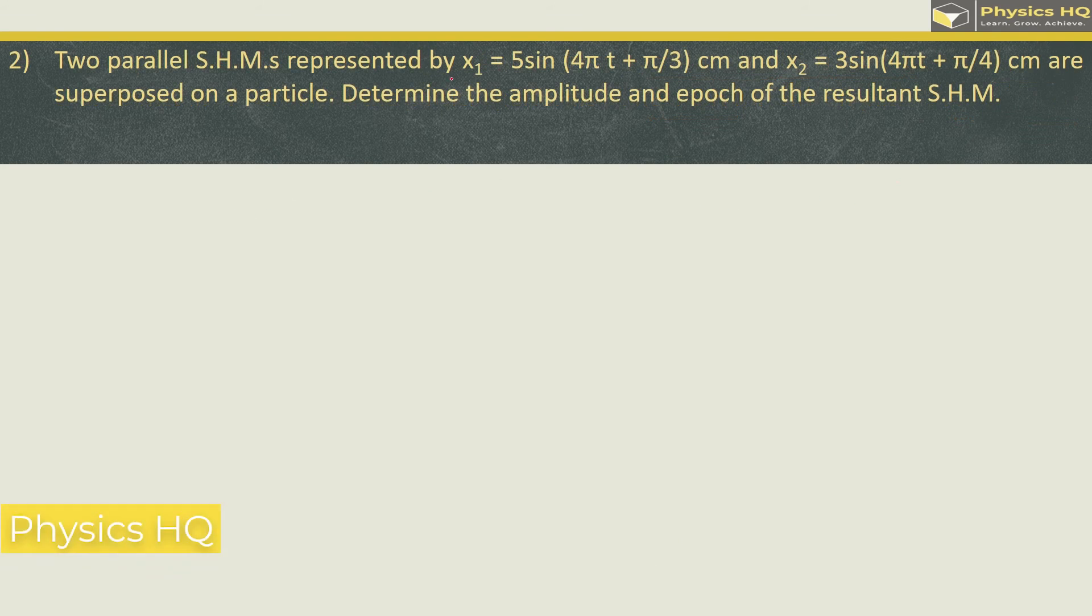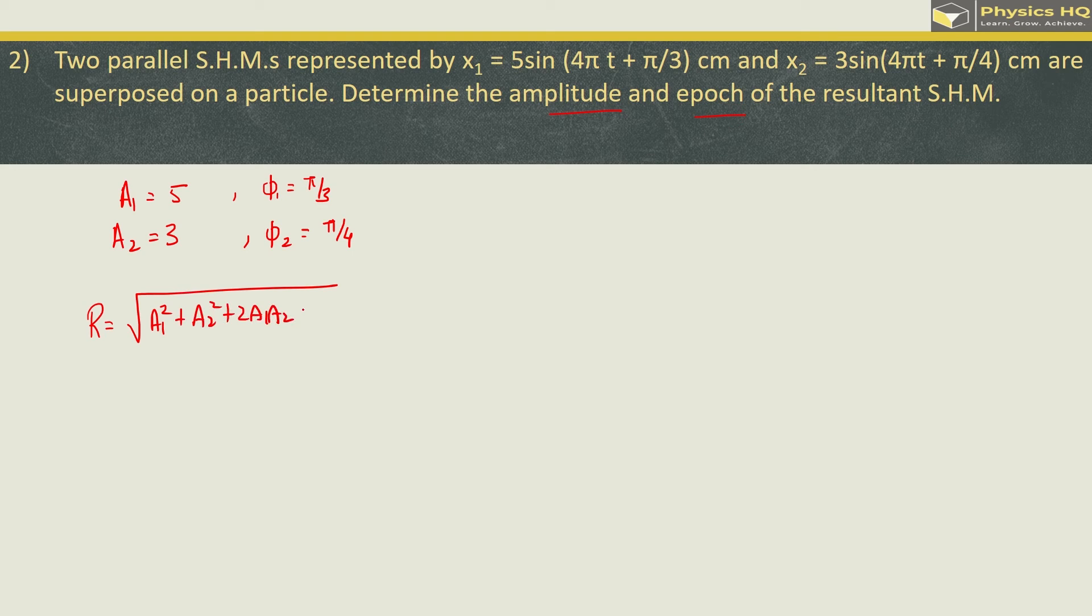Two parallel SHMs represented by x1 equals 5 sine of 4 pi t plus pi by 3 cm and x2 equals 3 sine of 4 pi t plus pi by 4 cm are superposed on a particle. So we got amplitude of the first one is 5, amplitude of the second one is 3, the phase of the first one is pi by 3 and the initial phase of the second one is pi by 4.